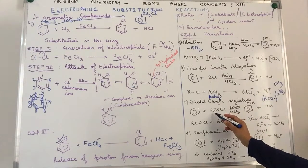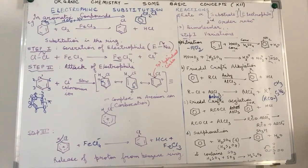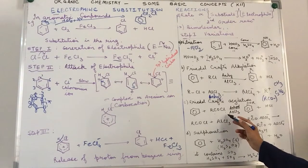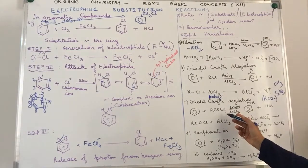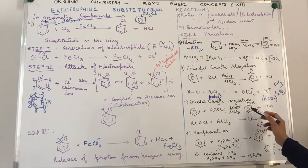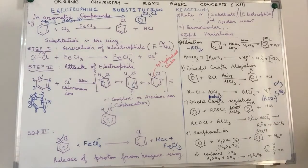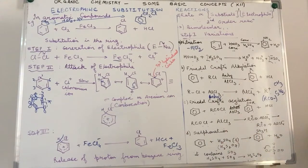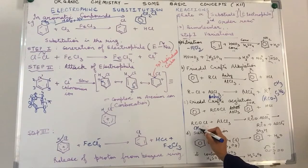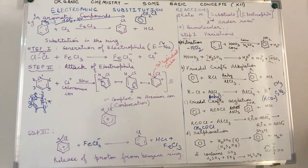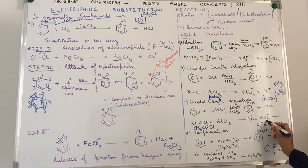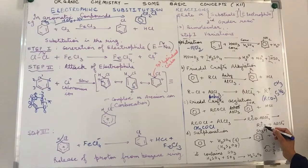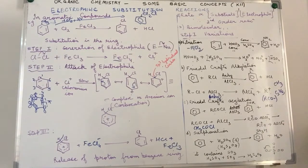Friedel-Crafts acylation is replacement by the acyl group RCO. We have acyl chloride RCOCl—for example, CH3COCl or ethanoyl chloride—in the presence of anhydrous aluminum chloride, giving the corresponding ketone. The mechanism of the first step: RCOCl, let's say CH3COCl acetyl chloride, plus AlCl3 will give an intermediate which releases RCO+, like CH3CO+, the acyl cation.